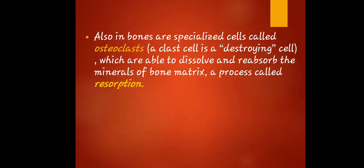In bones, there are special cells called osteoclasts. A clast cell is a destroying cell that is able to dissolve and reabsorb the minerals of the bone matrix — a process called resorption. So osteoclasts are destroying cells in the process of resorption. Always remember that.